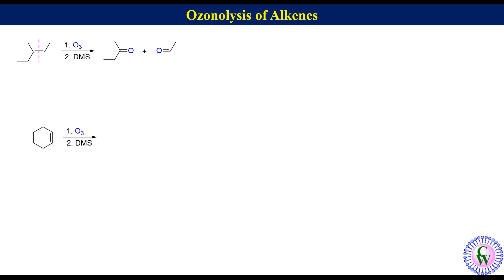Ozonolysis of cyclohexene: cut the molecule through the double bond to get an open-chain structure, and then put the oxygen at the terminus to get the product, which is hexanedial. Another example: in this example there are two alkenes, so cut the molecule through both double bonds to get three fragments, then put oxygen at the terminus of each double bond to get the products: acetone, 4-oxopentanal, and acetaldehyde.